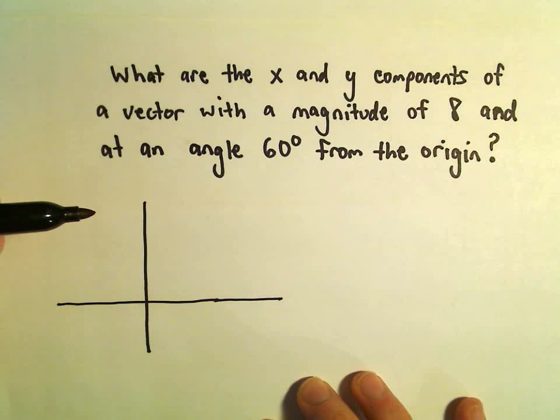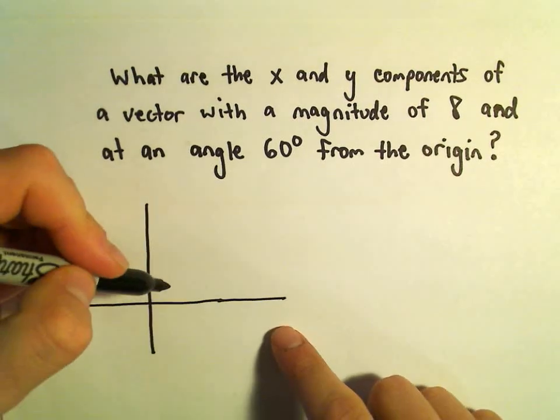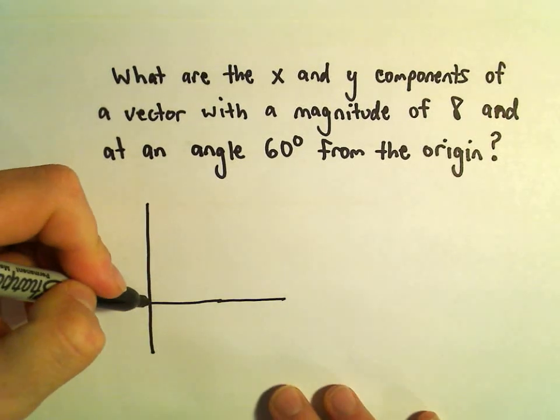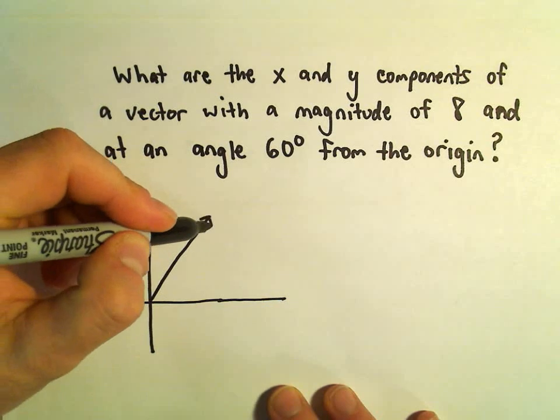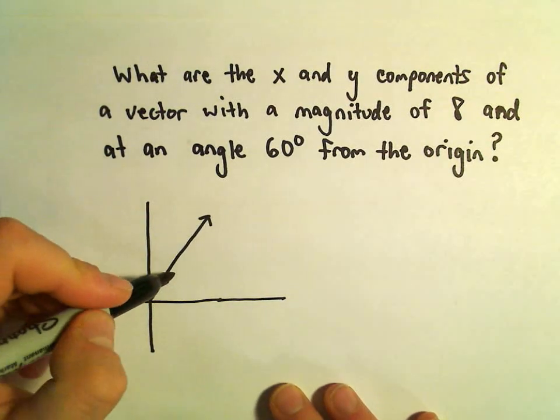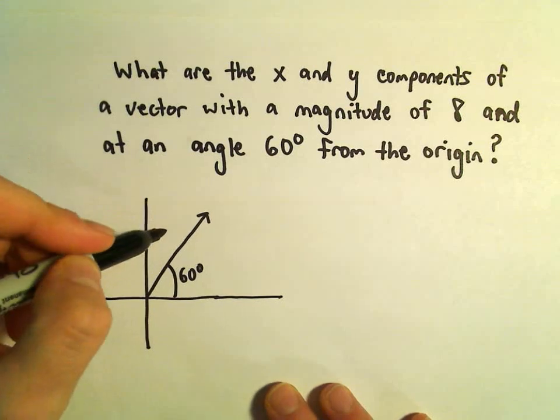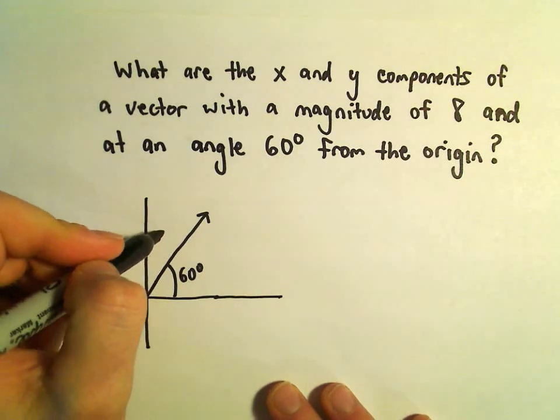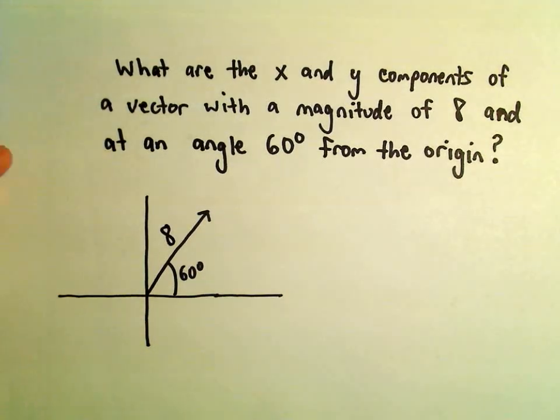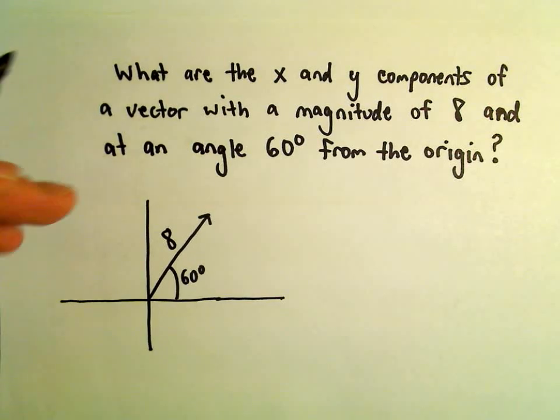So the idea is, we've got a vector that makes an angle of 60 degrees from the origin, so here's our angle of 60 degrees, and our vector has a magnitude of 8. Again, magnitude in these cases just corresponds to the length of the vector.